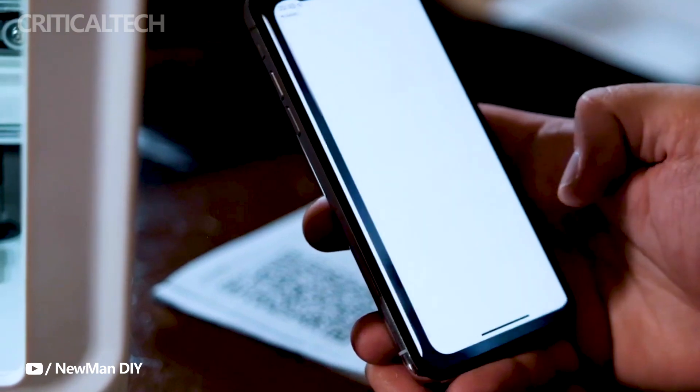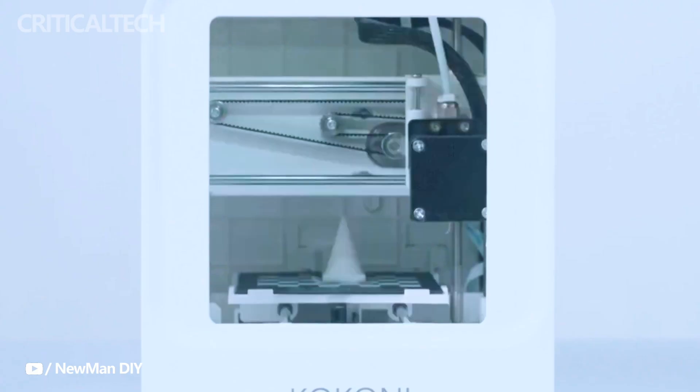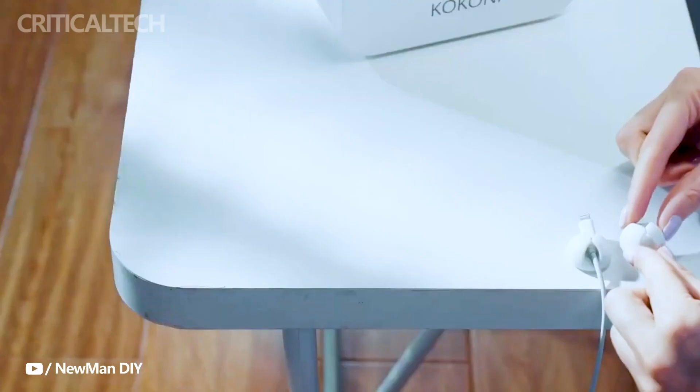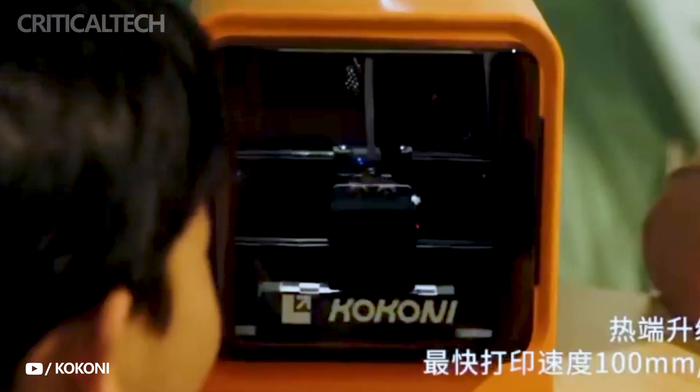What truly sets the Kokoni EC2 apart is its built-in HD camera, which opens up the world of time-lapse photography and video sharing. Now you can capture the mesmerizing process of your creations coming to life layer by layer. Additionally, the EC2 offers manual push and pull capabilities, giving you the power to fine-tune your models according to your preferences.